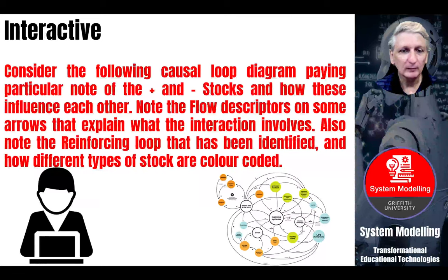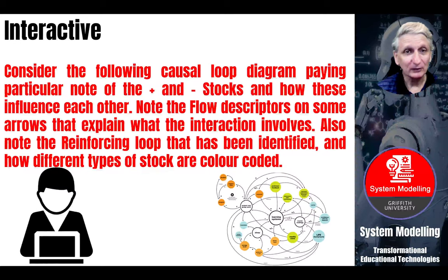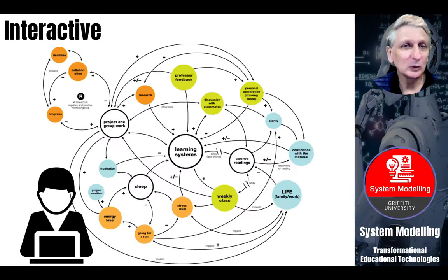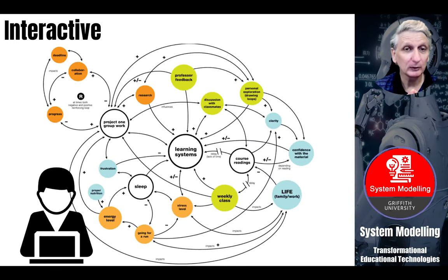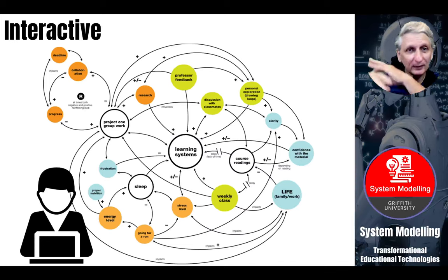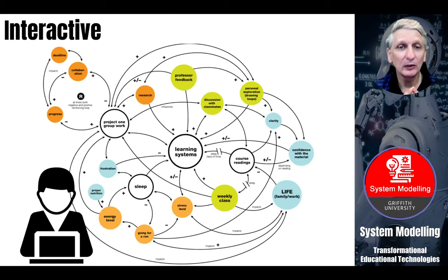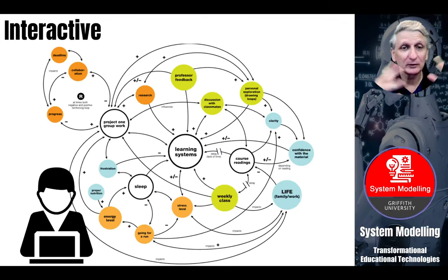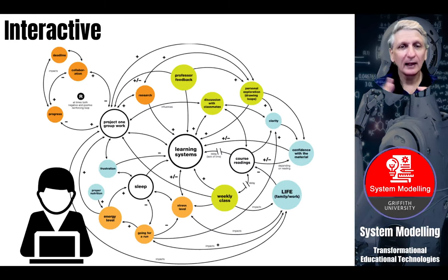The first model shows a learning environment and the various interactions that can be occurring — positive and negative — that affect various stocks within this particular system. Here we have the learning system in the centre, which could be something like a learning management system. In this system, they were doing project work, so that was a relatively important subsystem. There were course readings, students' sleep patterns, and how much time they had to devote to learning activities — and some interactions were reinforcing and some were balancing, identifying those causal loops that come into play when we examine systems.